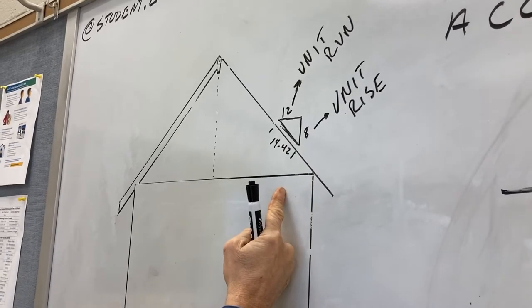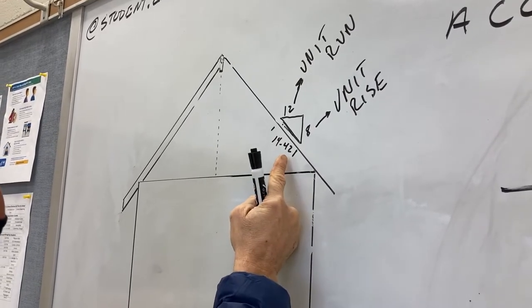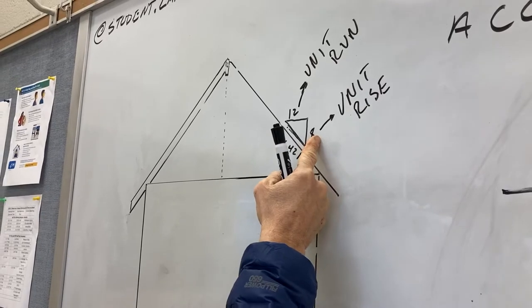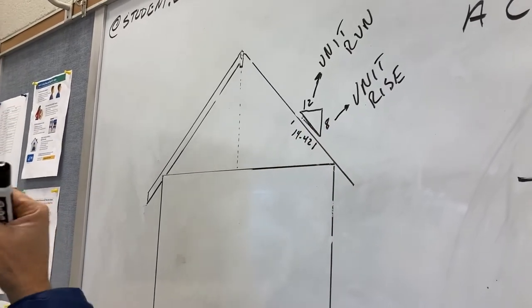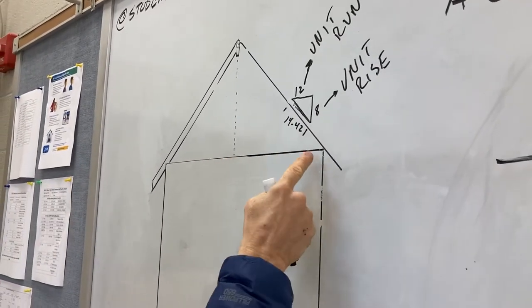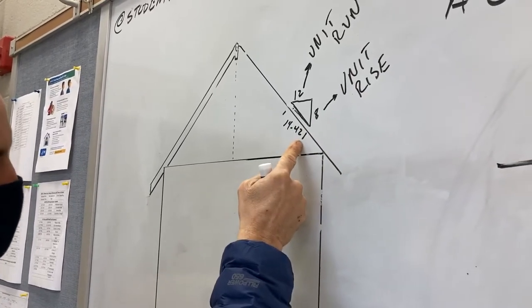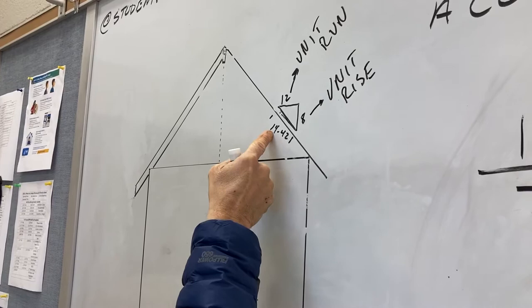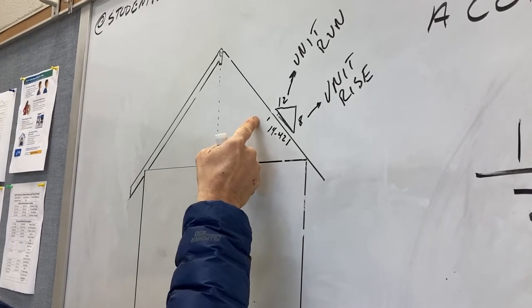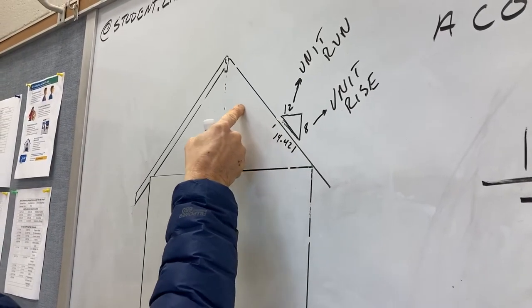We're talking about for every foot across this building, how high does the roof go up. How tall does the roof go up? So if I come over here 12 inches, how many inches up does it go? The higher the number, the steeper it is. We refer to this as the unit rise. In this particular case, we're going over a foot and up eight inches, repeating this pattern over a foot, up eight inches. That's how we come up.